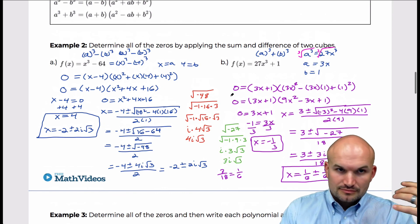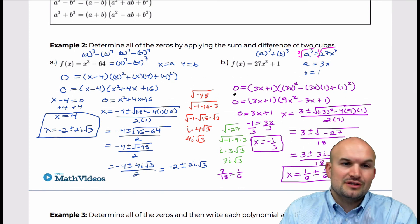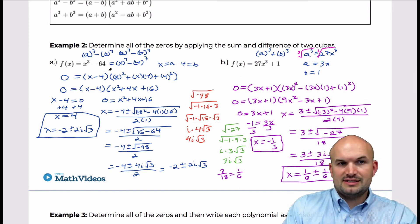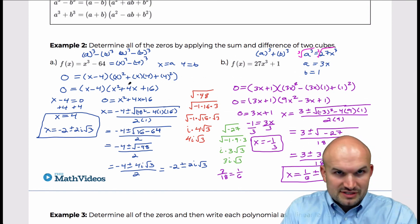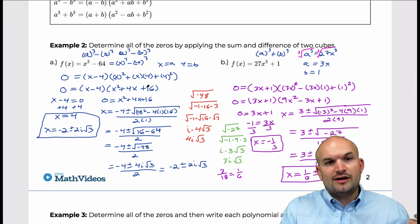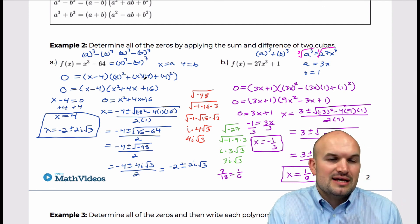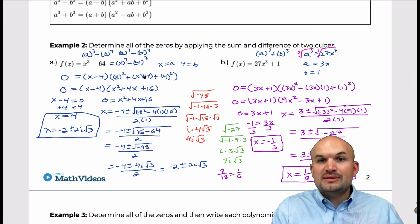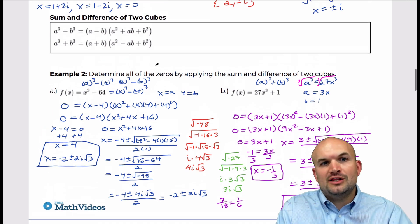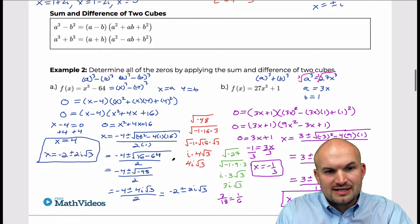That is identifying the zeros when we have a special product — the sum or difference of two cubes. When you're looking at these problems, obviously look into factoring. Look for difference of two squares, look for perfect square trinomials. And now that we know about complex solutions, if you see the sum and difference of two cubes, you can follow this pattern to help you solve them.